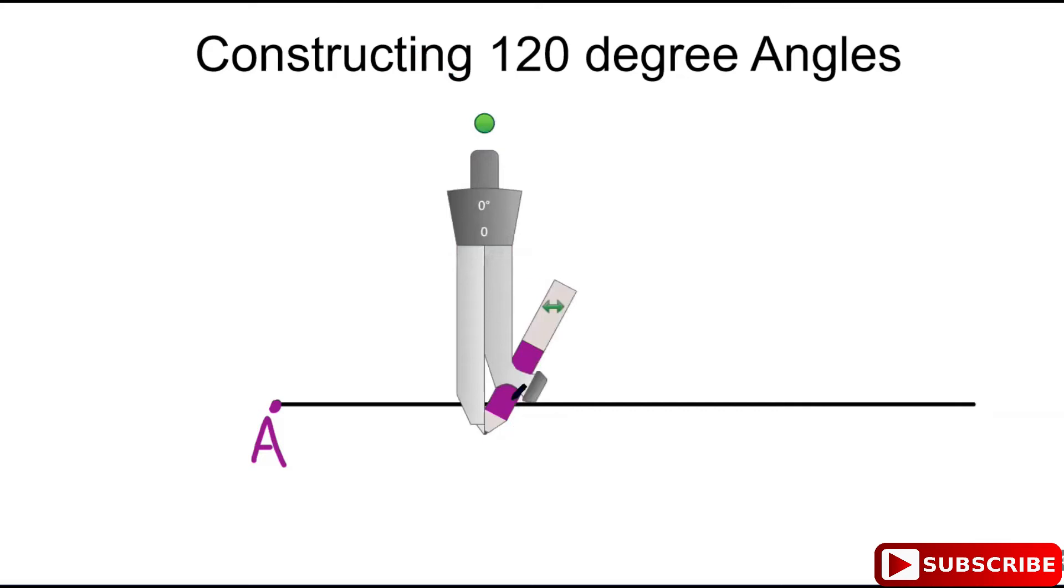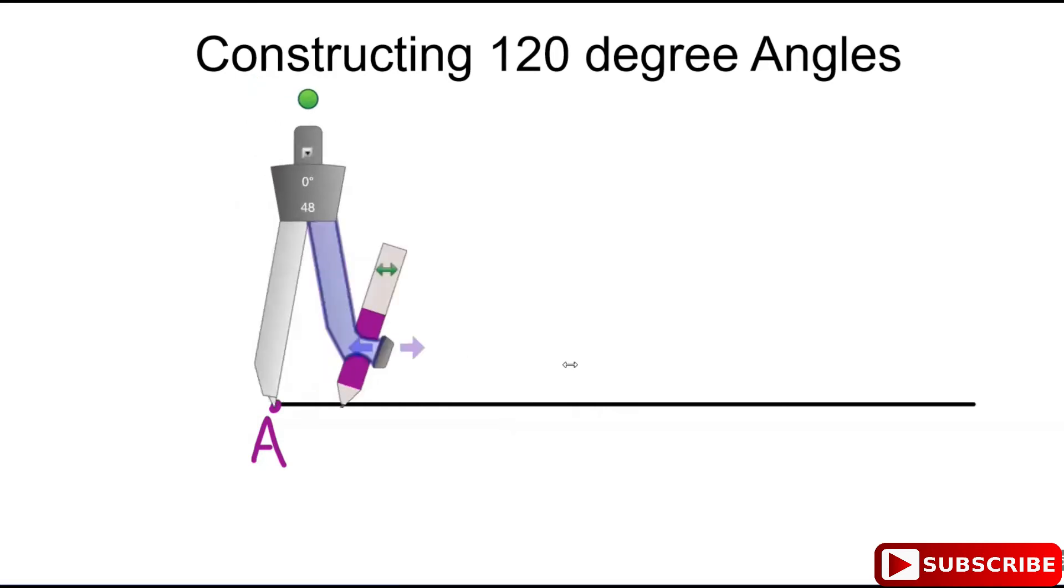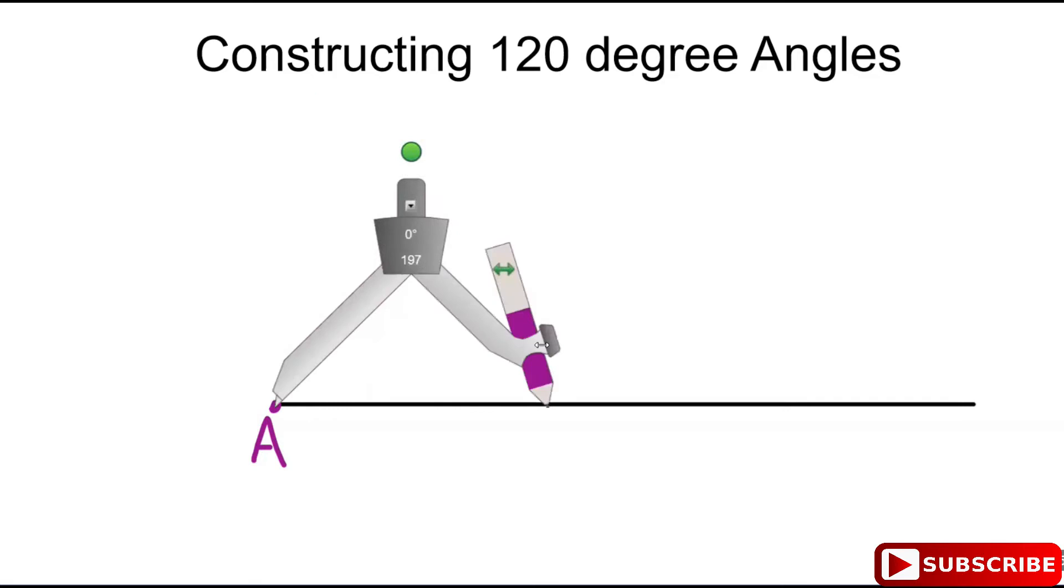Open your compass and move it to point A. Then you construct your 60-degree angle by swinging an arc from A.